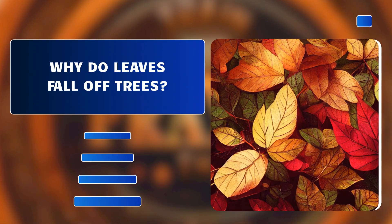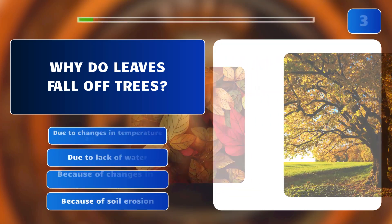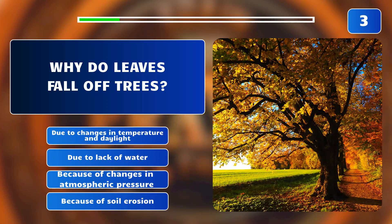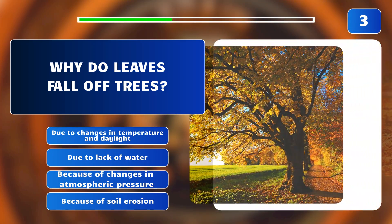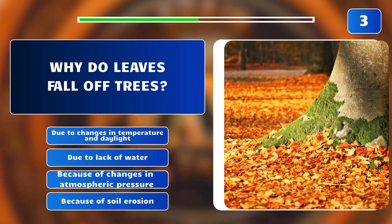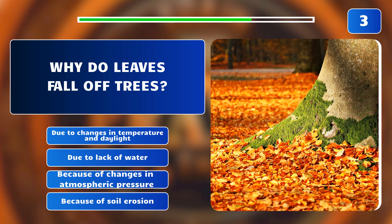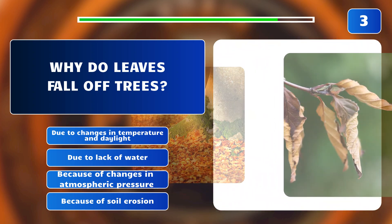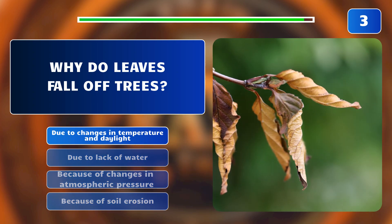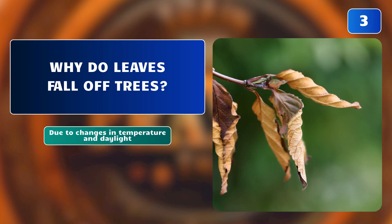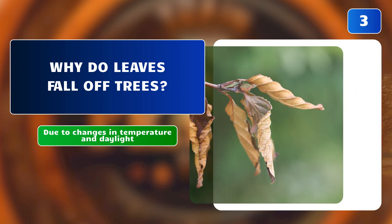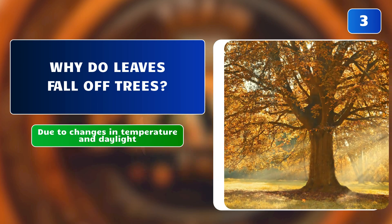Why do leaves fall off trees? Due to changes in temperature and daylight? Due to lack of water? Because of changes in atmospheric pressure? Because of soil erosion? The correct answer is: due to changes in temperature and daylight. It's a natural process in preparation for winter, triggered by changes in temperature and daylight.